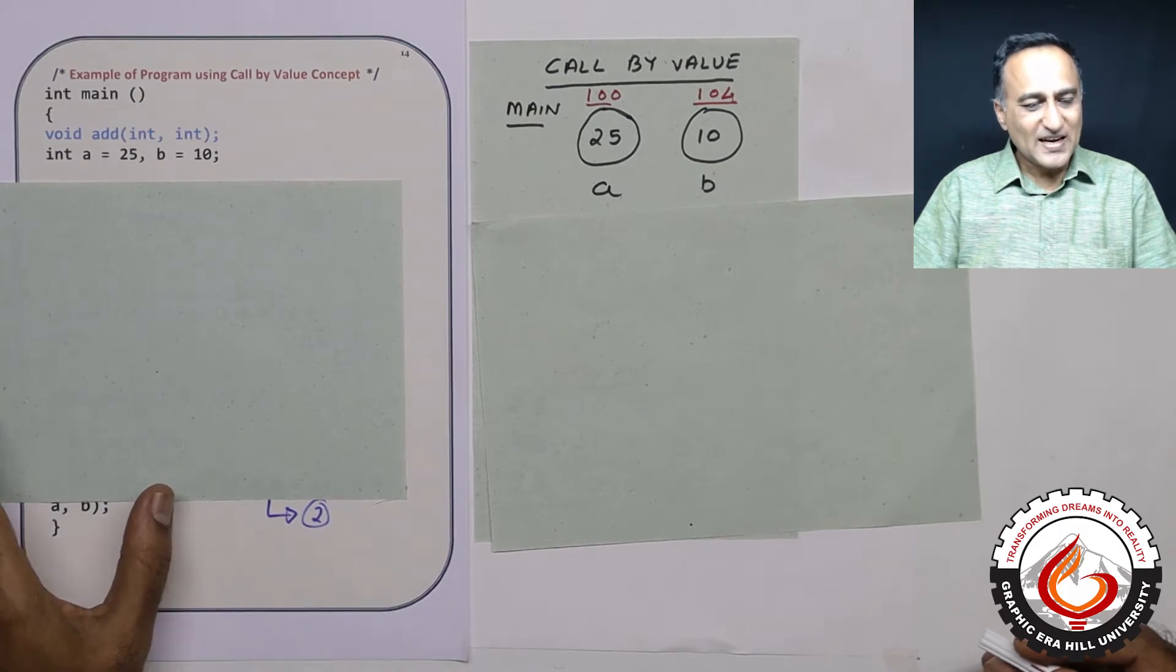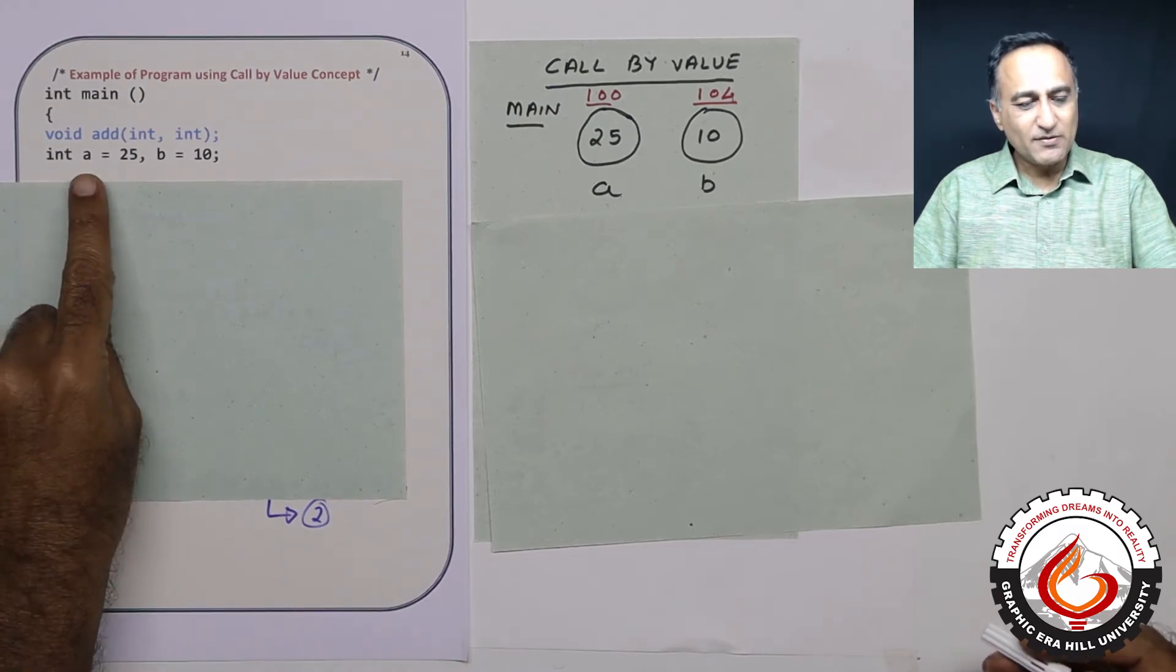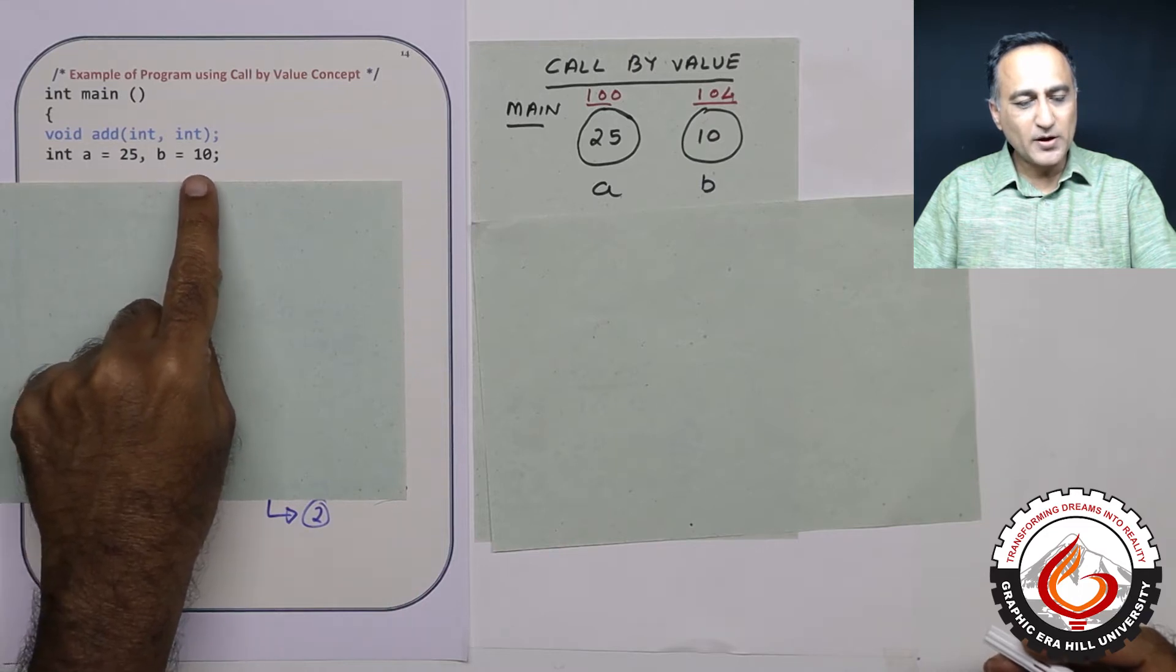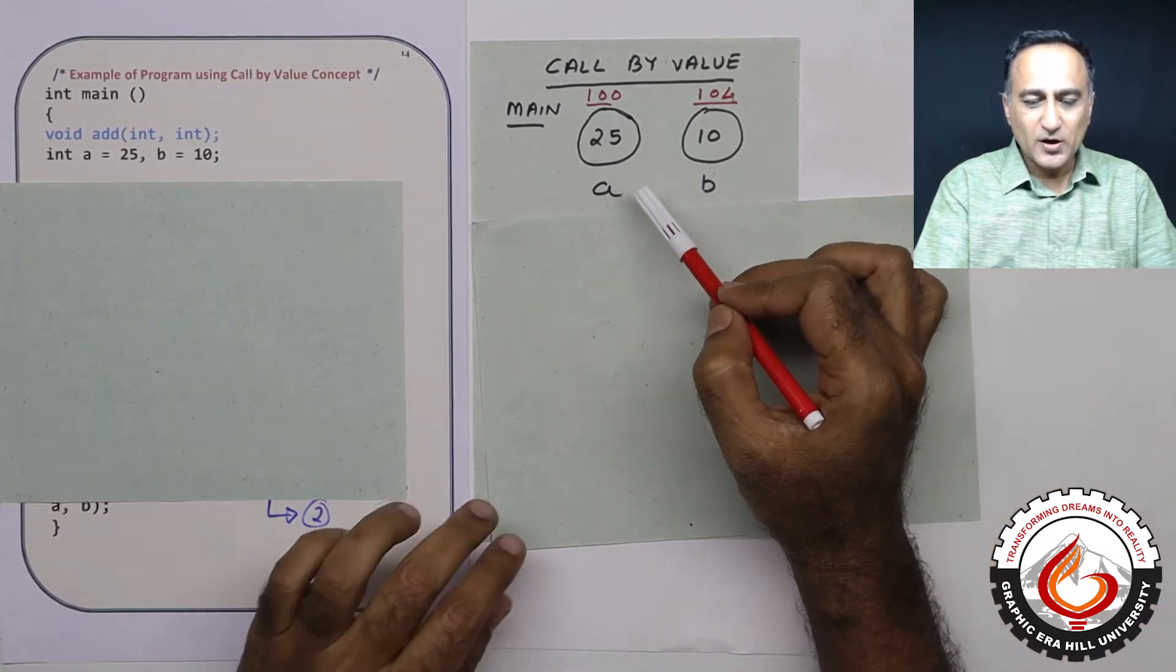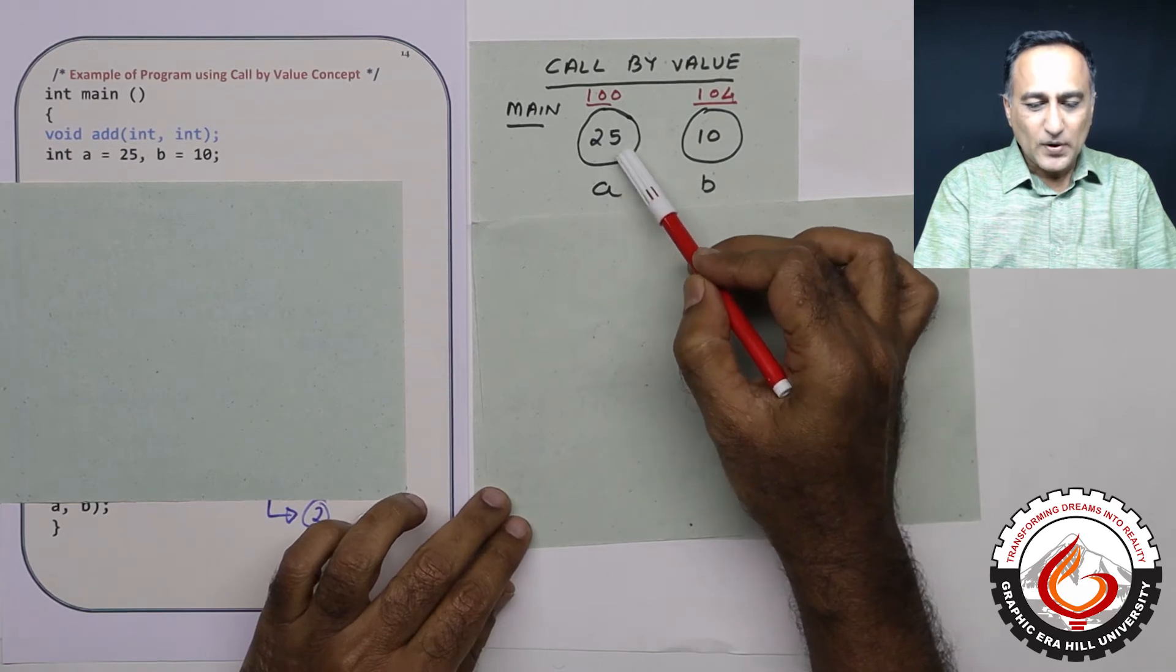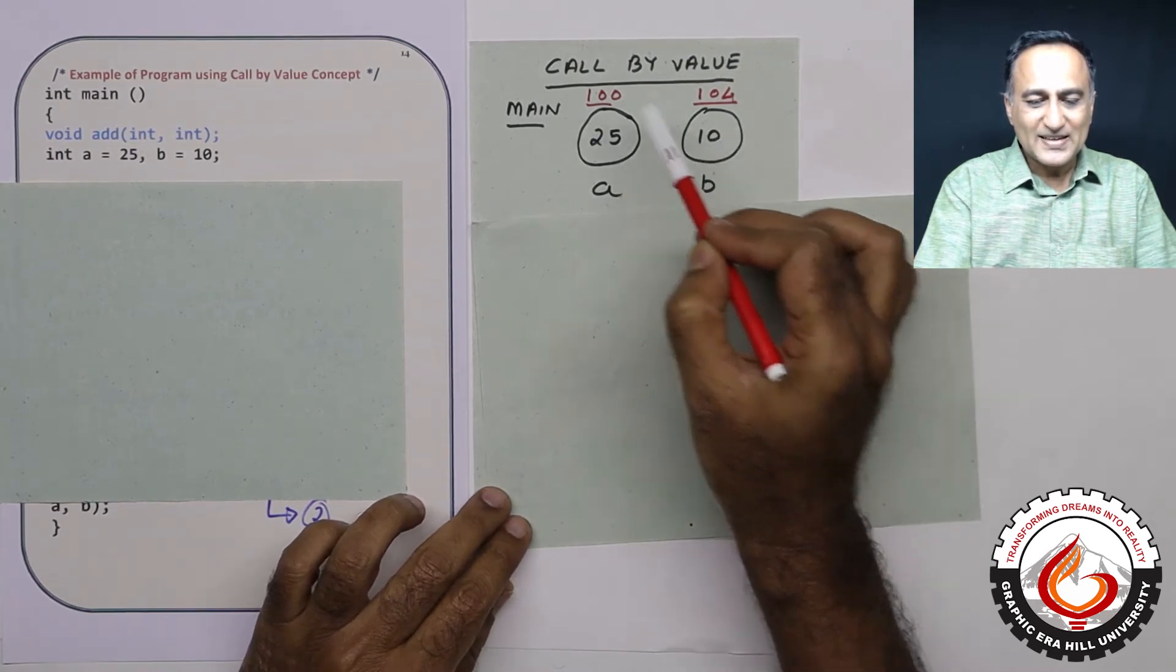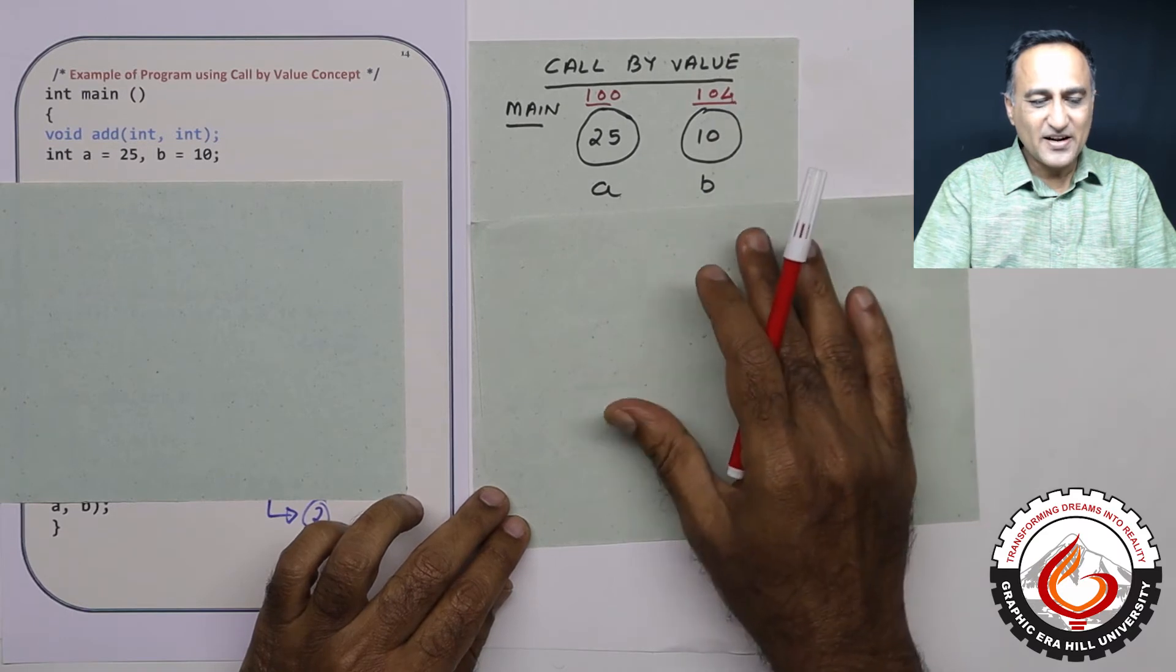I have declared an integer variable A with value 25, and integer variable B with value 10. So this is how it looks: A is 25, B is 10. Let's say A is at address 100, B is at address 104.